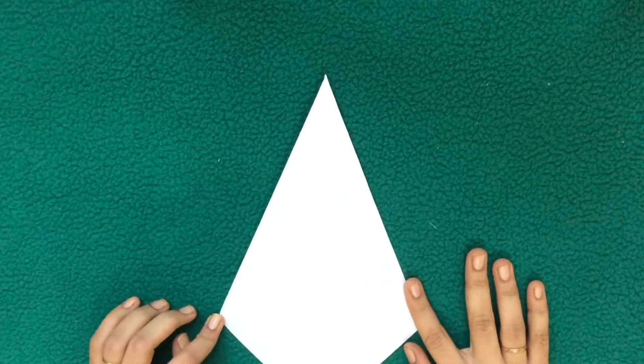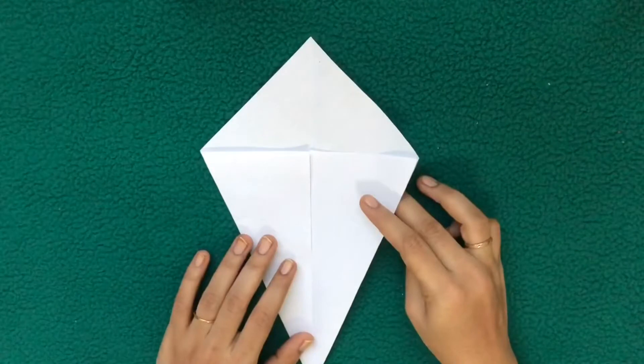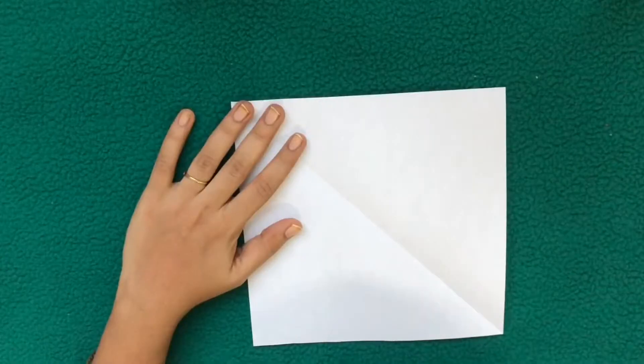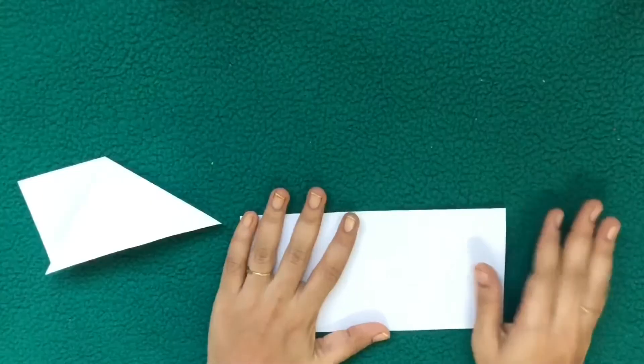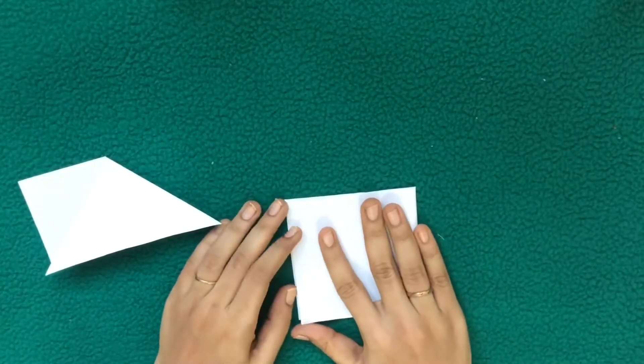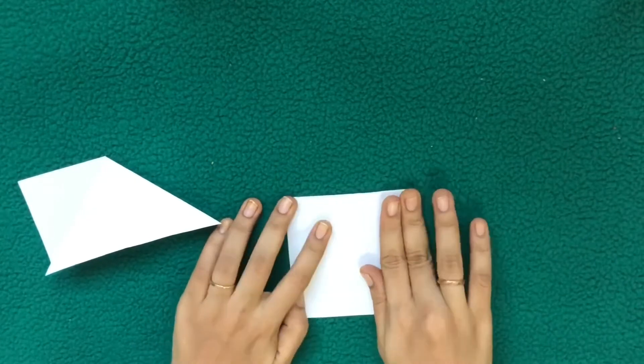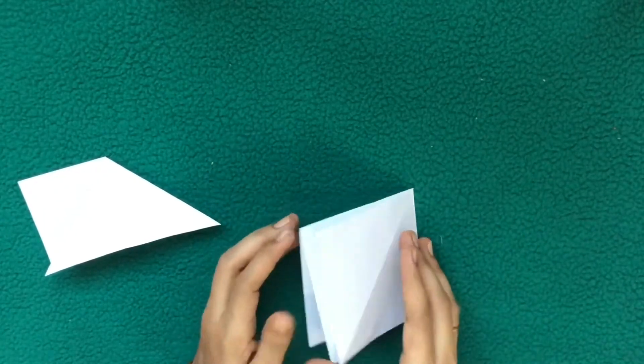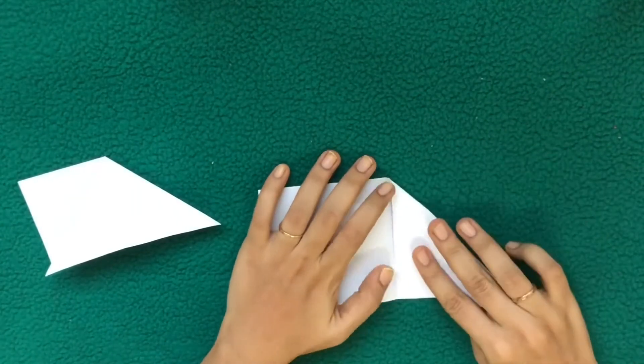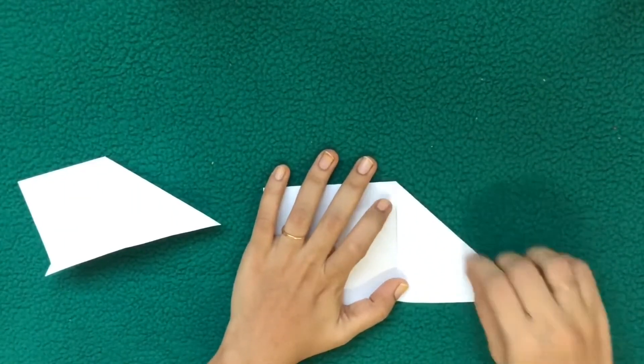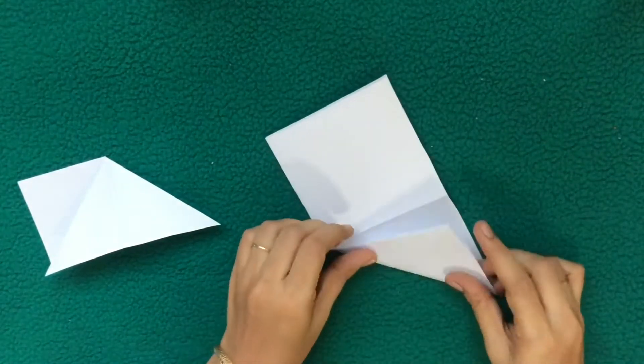And if you turn it, is valley fold. Next I will show you squash fold. Fold the paper into half, again fold into half and unfold it. Now fold the top right corner forward to the center and also backward.